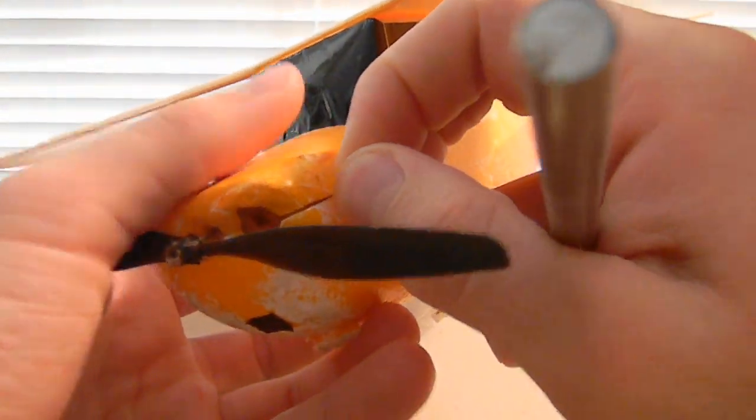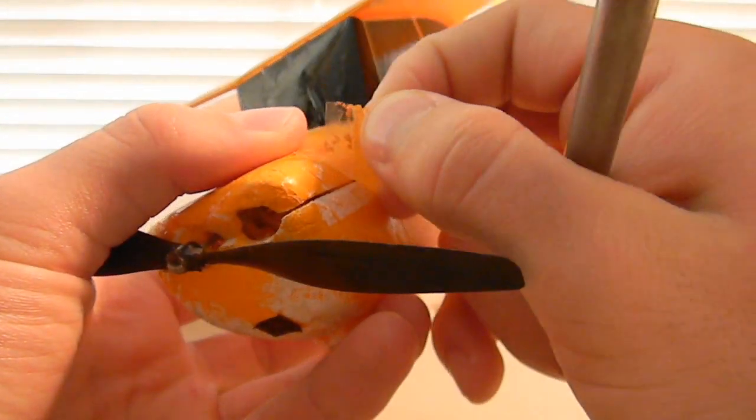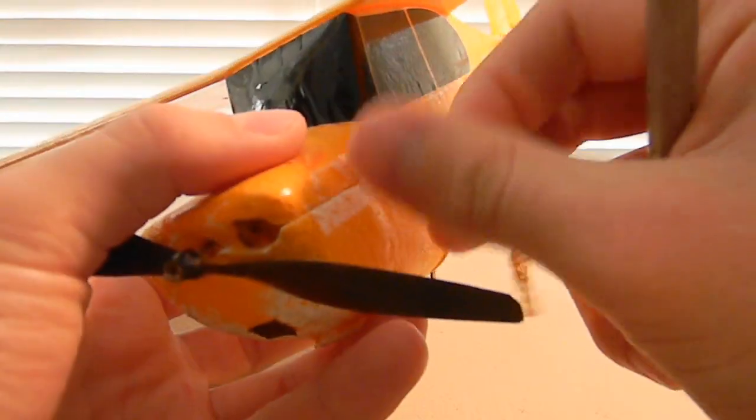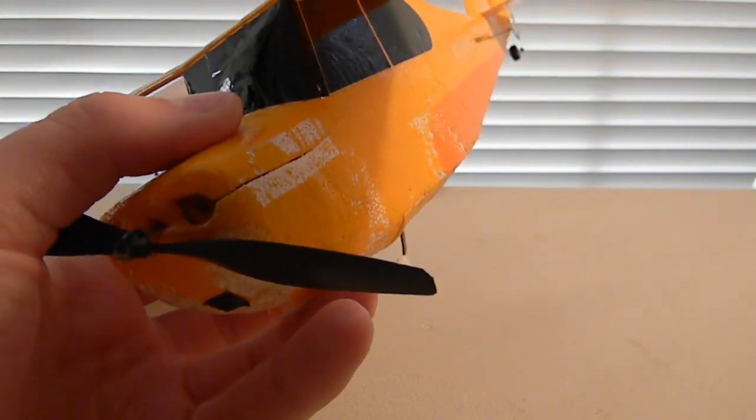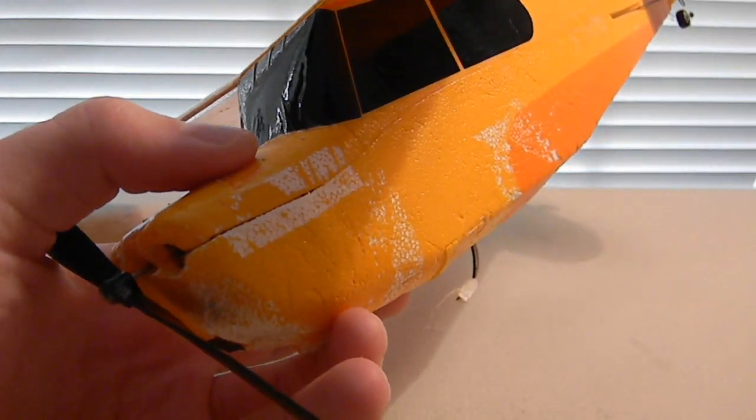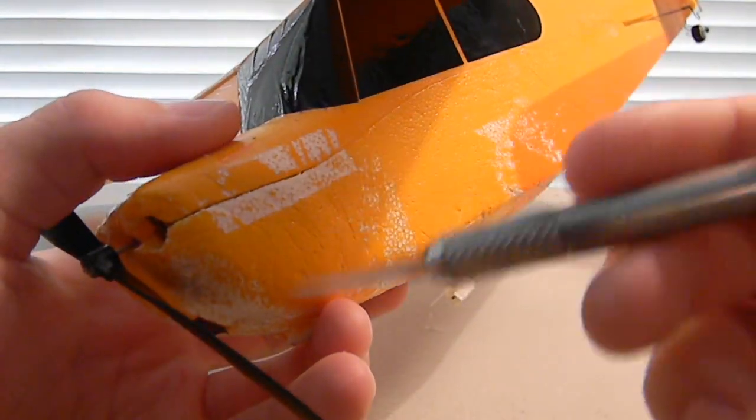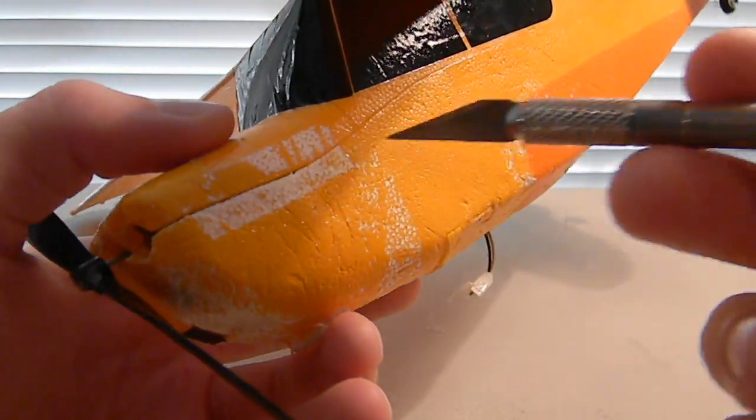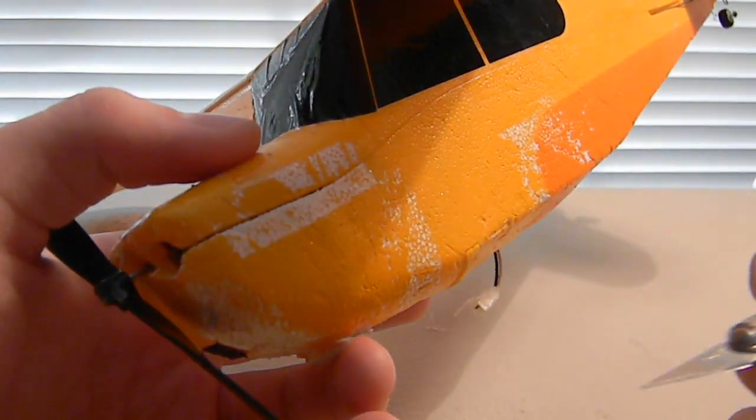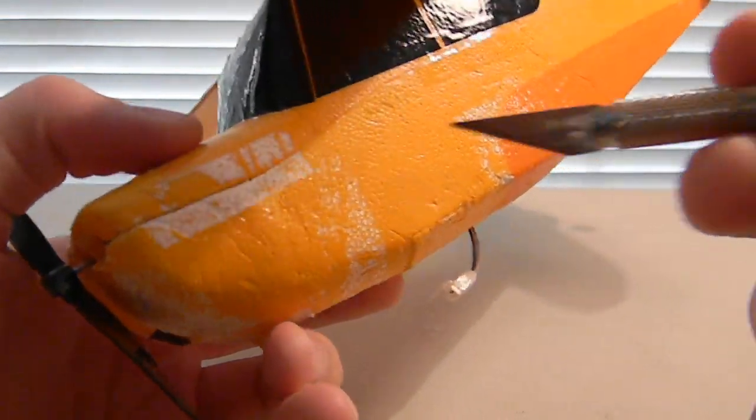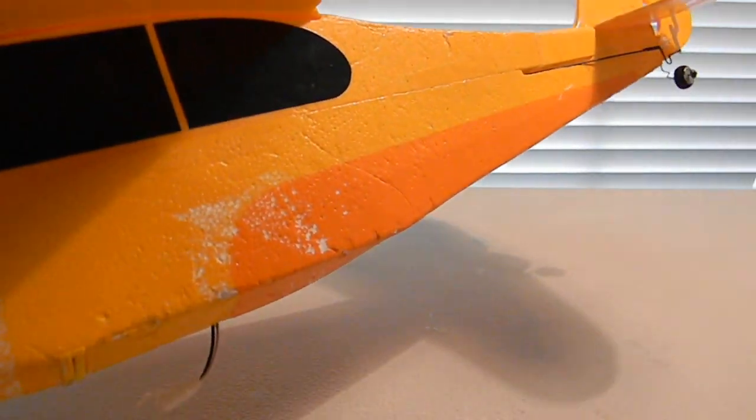you can just peel it up. The paint may come off but you can take an orange marker and paint over it again. Or if you don't want to peel it off, you can just cut it and it won't remove the paint. Just do that all the way around.